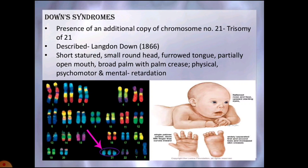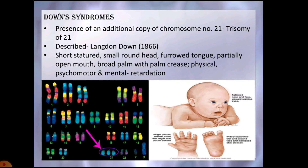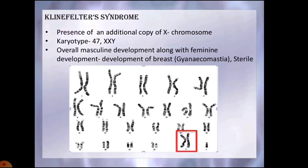Klinefelter syndrome is caused by the presence of an additional copy of the X chromosome, giving a karyotype of 47 chromosomes with XXY sex chromosomes. The individual is male and has an overall masculine development but with underdeveloped testes, little hair on the body, mental retardation, and feminine development such as breast development. Individuals are sterile due to abnormal seminiferous tubules.